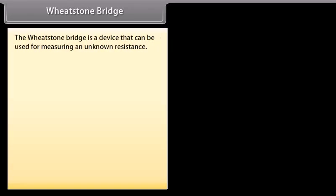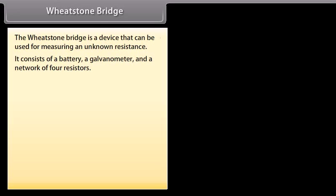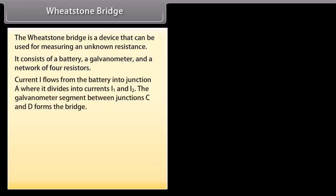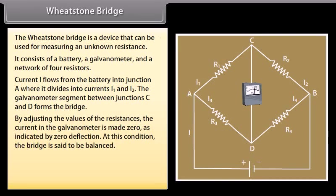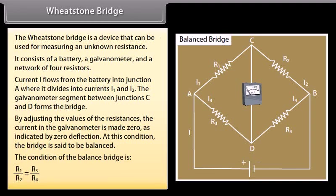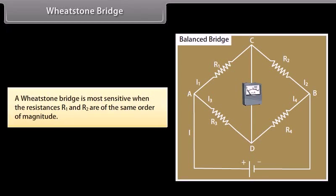The Wheatstone bridge is a device used to measure an unknown resistance. It consists of a battery, a galvanometer, and a network of four resistors. Current I from the battery divides into I₁ and I₂ at junction A. By adjusting the resistances, the galvanometer current is made zero — the bridge is then balanced. The condition for a balanced bridge is R₁/R₂ = R₃/R₄. The bridge is most sensitive when R₁ and R₂ are of the same order of magnitude.